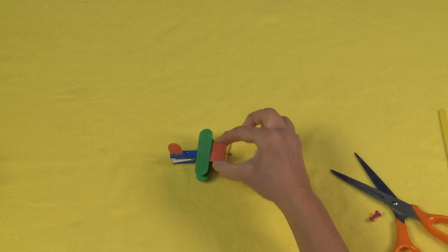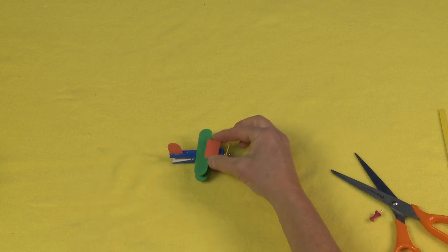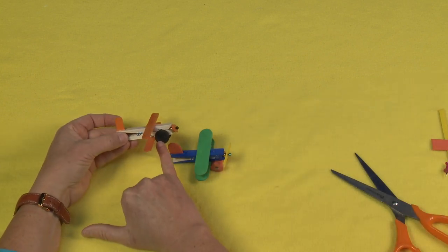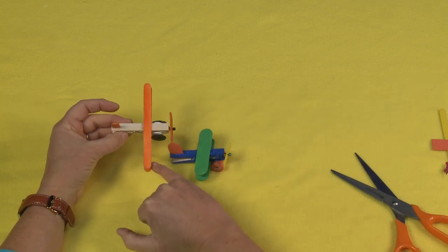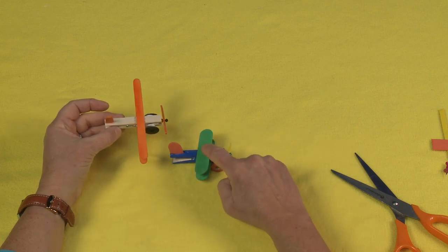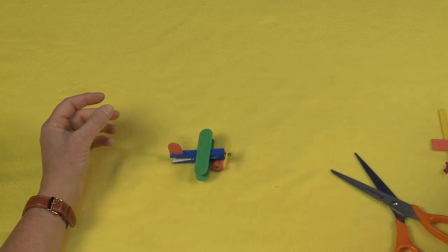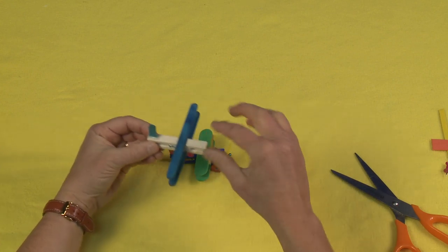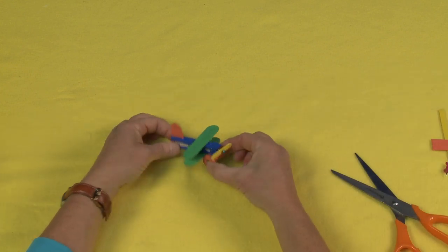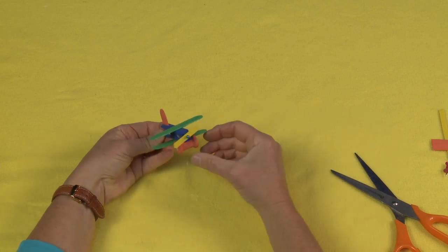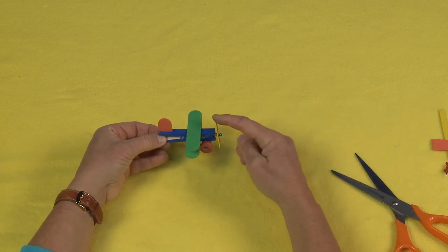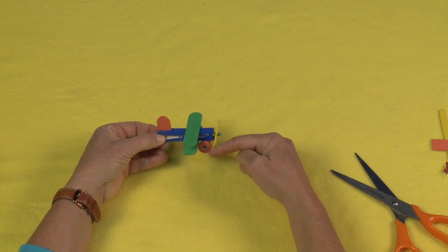Now if you wanted to you could add like a little front window. I just want to show you real close up, this is using buttons and using popsicle sticks because you might not be able to find these. And this is using little pony beads. So if you don't have all of these little supplies, get creative because I'm sure you can find something in your craft box that will fill the need.